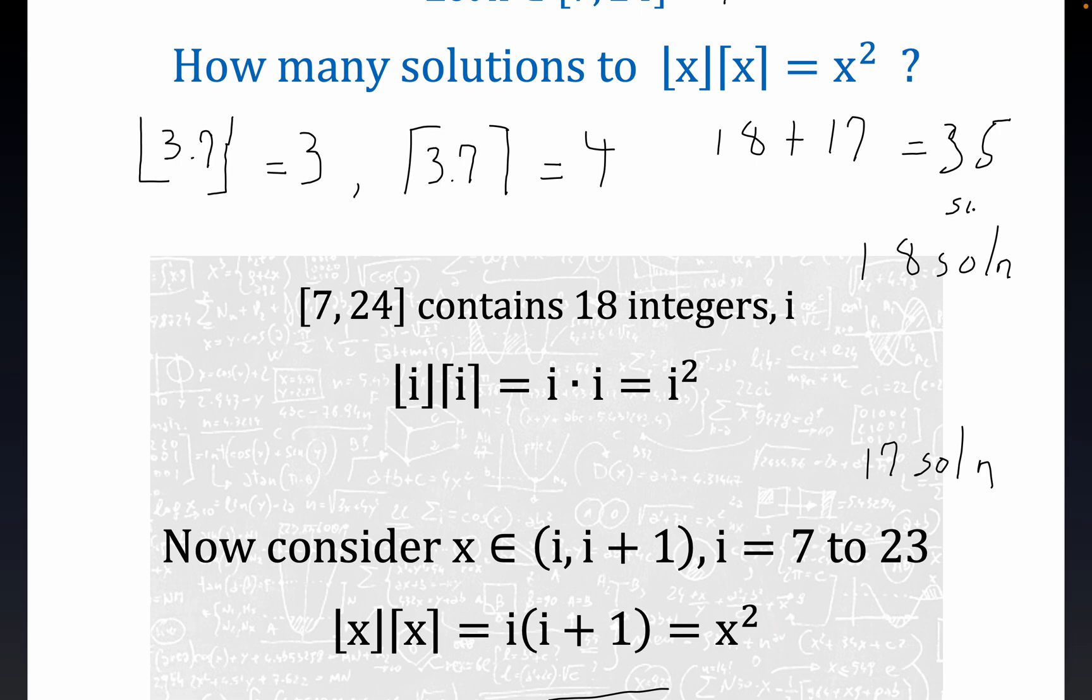Kind of a fun little contest problem, not super challenging. You just have to know the definition of floor and ceiling functions, and there's a little bit of reasoning going on here, breaking it up into disjoint circumstances where you deal with all the integers as one of the cases - think of this as case one.